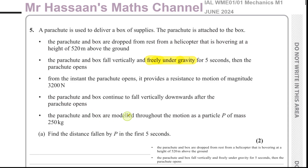The parachute and box continue to fall vertically downwards after the parachute opens. They are modeled throughout the motion as a particle P of mass 250 kilograms. Part A says: find the distance fallen by P in the first five seconds.